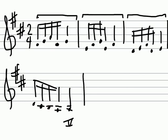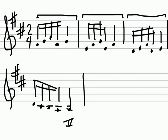Notice that when I say it went down a step, from F-sharp to E is a step, and from E to D is a step. But the intervals within the pattern — half step, whole step, whole step, half step, whole step, whole step, whole step — are different in each segment of the sequence. This is a characteristic that we refer to as a diatonic sequence.